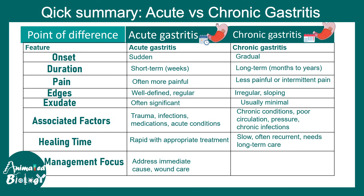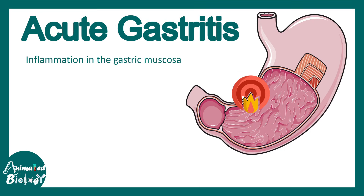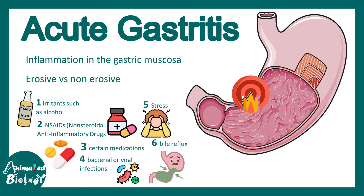In terms of management focus, for acute gastritis, if the immediate cause is addressed it would heal. For chronic gastritis, managing the underlying cause and recurrent infection is a challenge. Now let's delve deeper — acute gastritis means inflammation of the gastric mucosa for a sudden duration; it's often erosive, though it might not always be erosive.